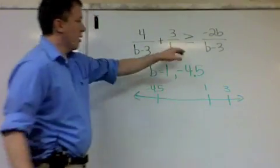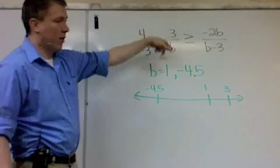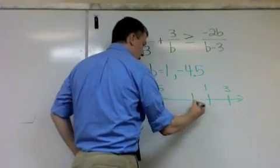I would also put 0 because if I put 0 in for b, 3 over 0, that's undefined. So I put in 0 as well.